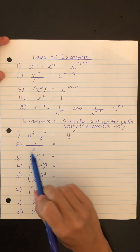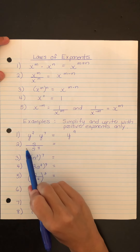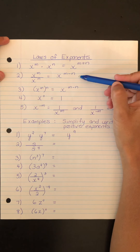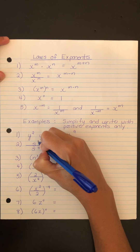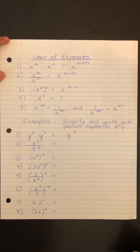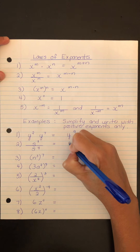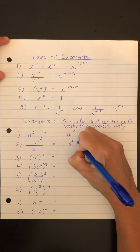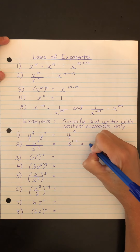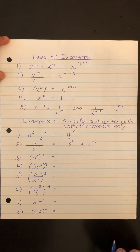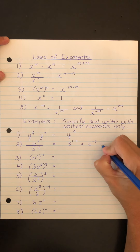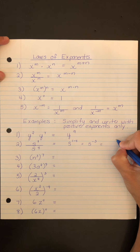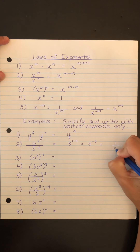In question two, the base is s and we are dividing, so we use the second rule. The implied exponent here is a 1, so we do 1 minus 4, which gives us an exponent of negative 3. In order to comply with our instruction, we rewrite this as 1 over s cubed.